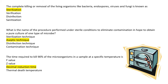Next: the time required to kill 90 percent of microorganisms in a sample at a specific temperature is what — F value, Z value, decimal reduction time, or thermal death temperature? The correct option is decimal reduction time.